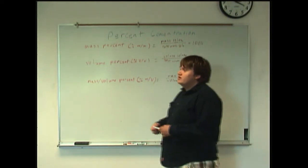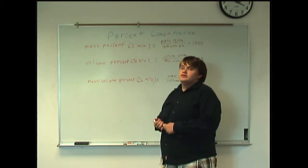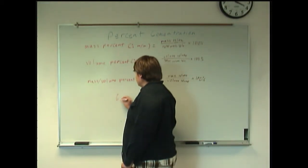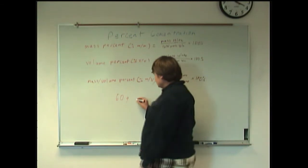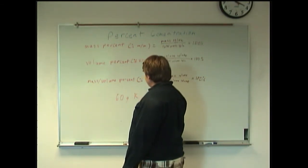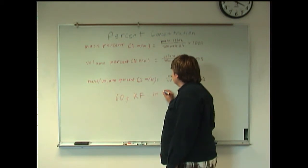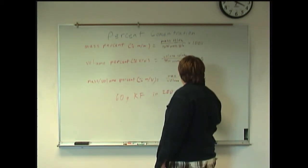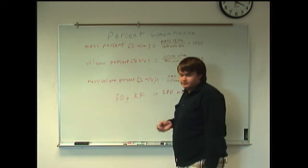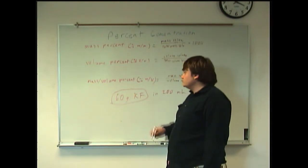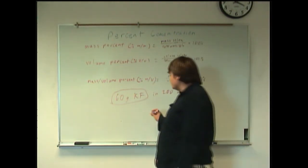So let's say we have 60 grams of potassium fluoride dissolved in 200 milliliters of water. So we're going to take our mass, this is our 60 grams of potassium fluoride, the mass of our solute.